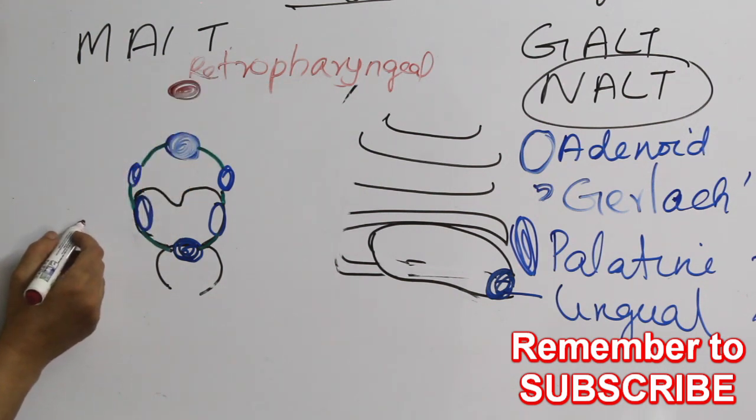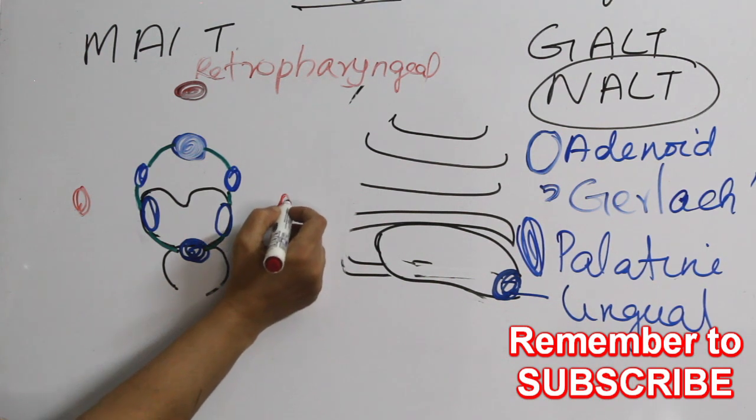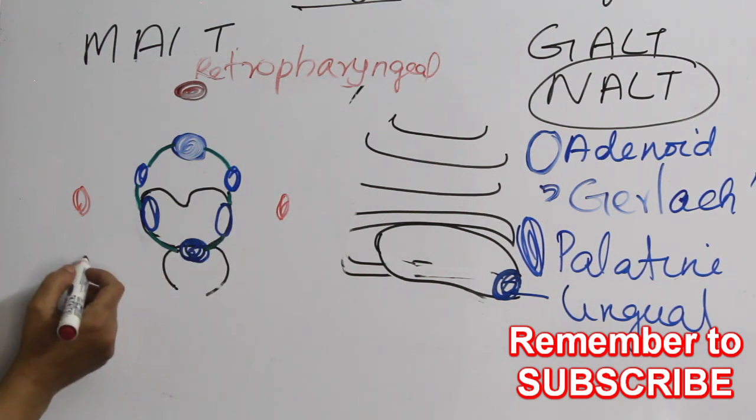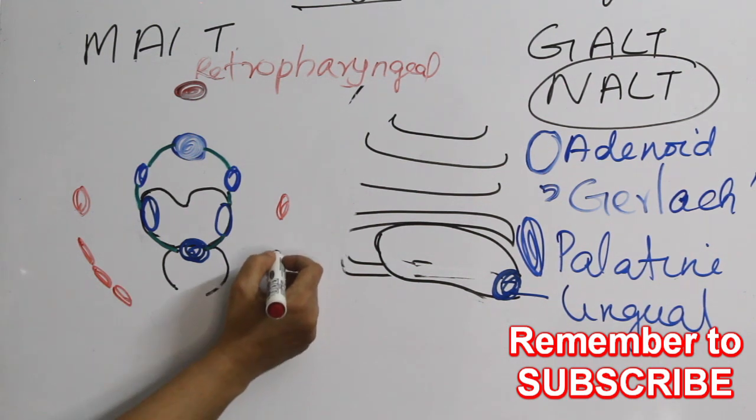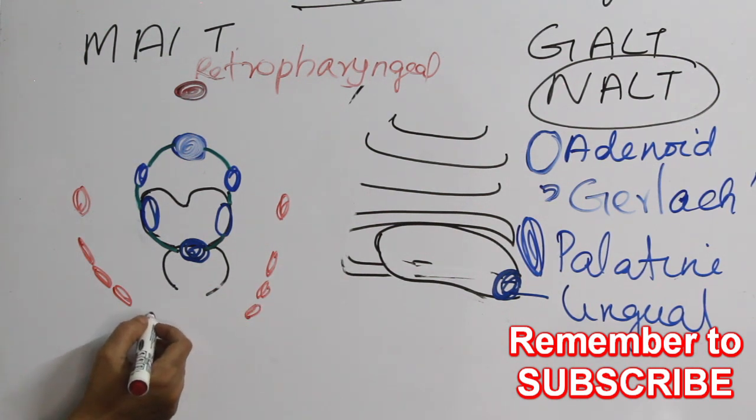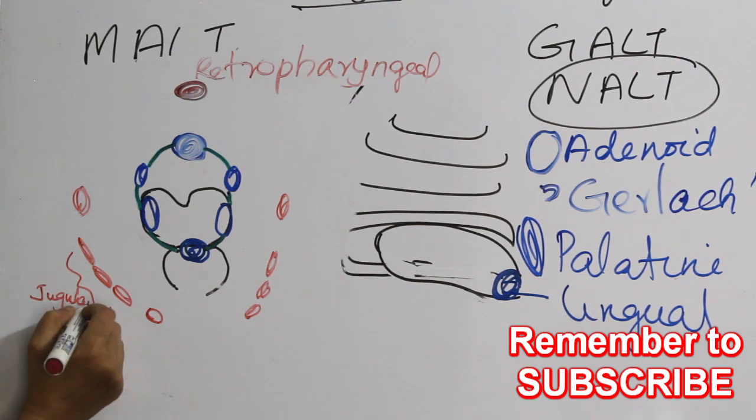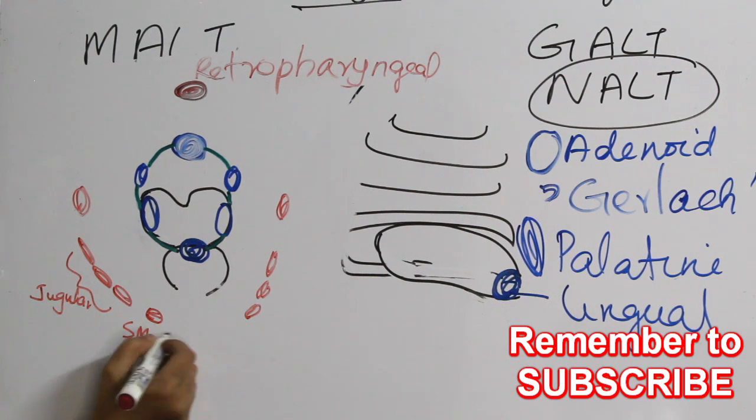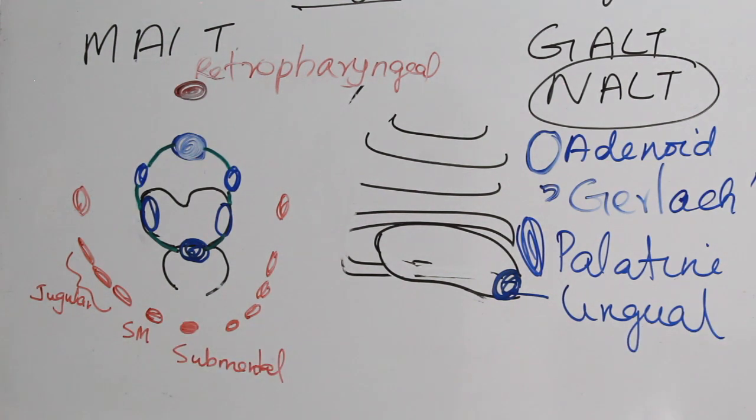Palatine tonsils usually drain into jugulodigastric lymph nodes. There is jugulodigastric lymph node on both sides. Then next is jugular chain of nodes. There are upper jugular, mid jugular, and also there is lower jugular. Here also upper, middle, and lower jugular node. Then comes this submental and also submandibular. This is jugular group. Submandibular both sides and also submental. Again we can make it into a ring likewise.